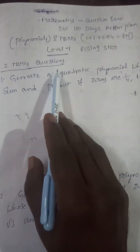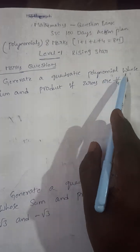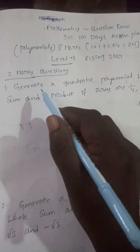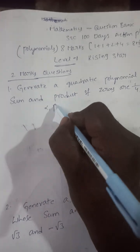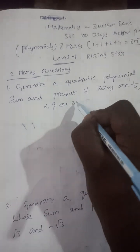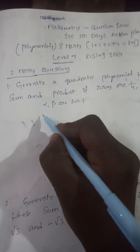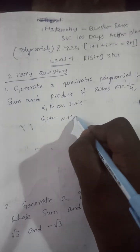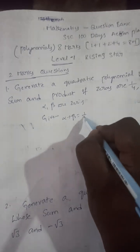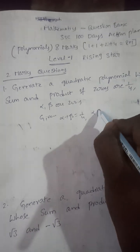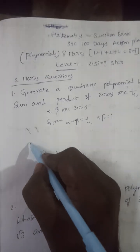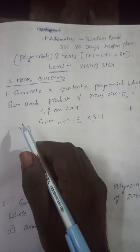Welcome. Question: generate a quadratic polynomial whose sum and product of zeros are one-by-four and one respectively. Let alpha and beta be the zeros of the quadratic polynomial. Given: sum of zeros, alpha plus beta equals one-by-four; product of zeros, alpha into beta equals one.